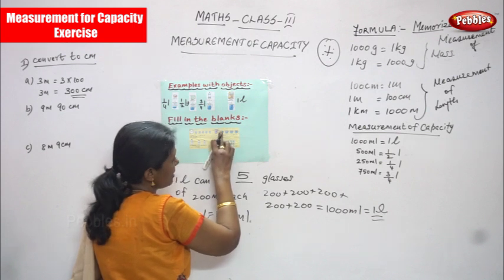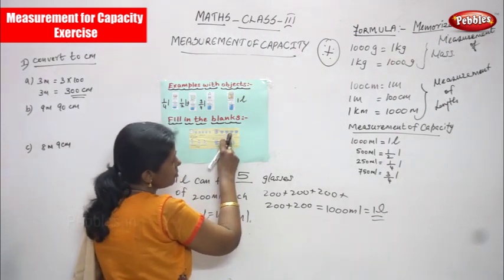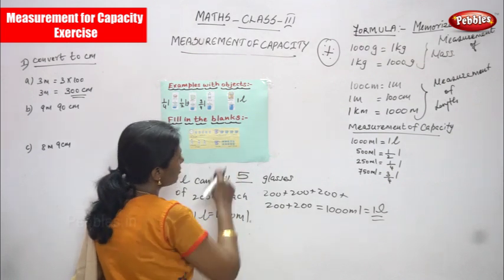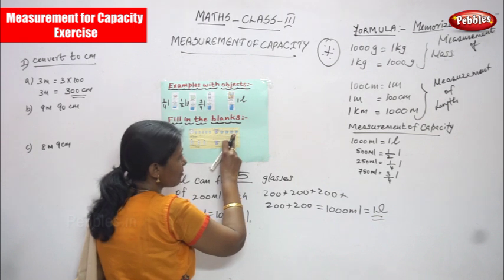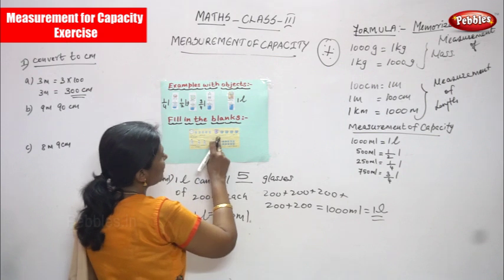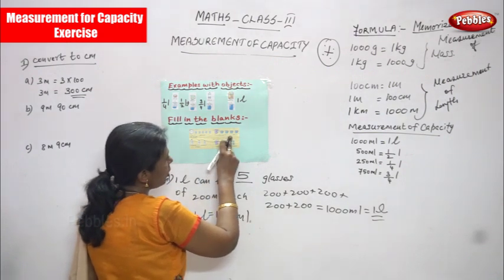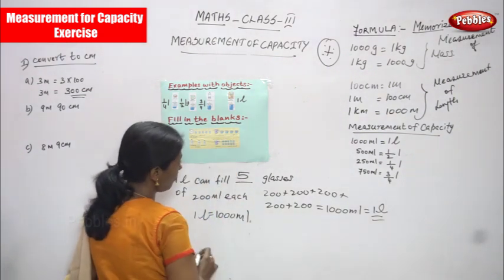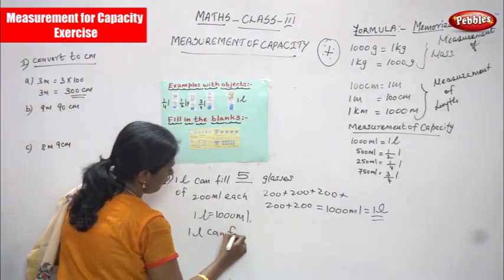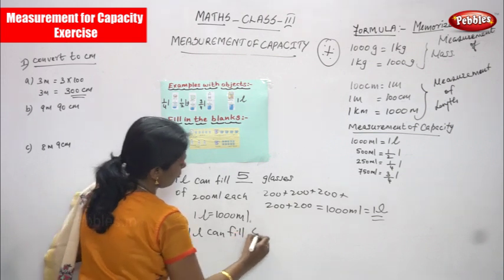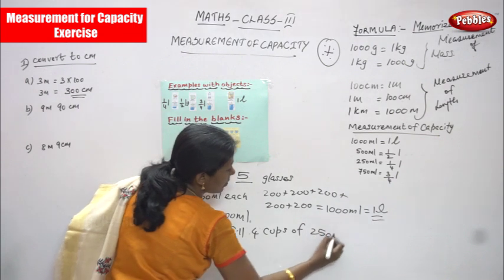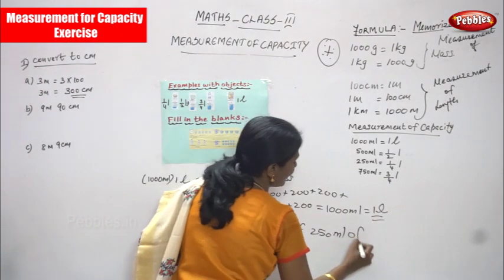So 250 ml first cup, second cup also 250 ml, third cup also 250 ml, fourth cup also 250 ml. So 250+250=500, 500+250=750, 750+250=1000. So 1 liter can fill 4 cups of 250 ml of each. This is the right answer. 4 cups of 250 ml of each.